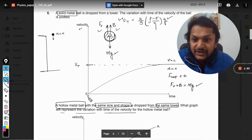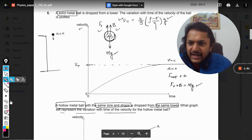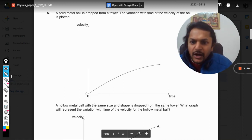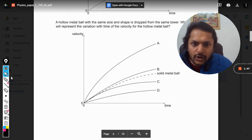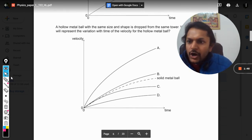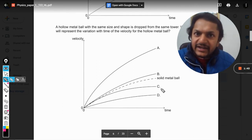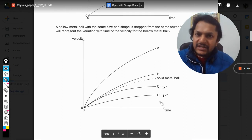By this explanation, what can I say? I'm erasing this now. According to these graphs, the velocity gained will be lesser, so either it will be C or it will be D.